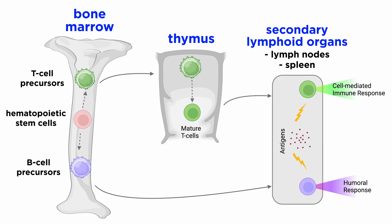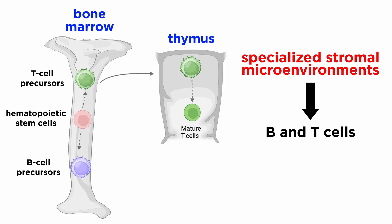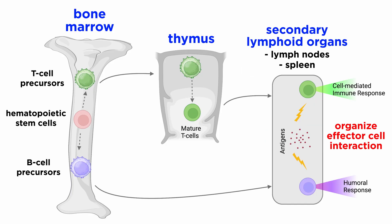After developing in the primary lymphoid organs, these cells migrate to the secondary lymphoid organs, including lymph nodes and the spleen, where they are designed to capture circulating antigens from lymph and blood respectively. Primary lymphoid organs provide specialized stromal microenvironments that promote the generation of the primary repertoire of B and T lymphocytes. Secondary lymphoid tissues specialize in orchestrating immune responses by spatially organizing the interaction between various immune effector cells, such as antigen-presenting cells and lymphocytes.